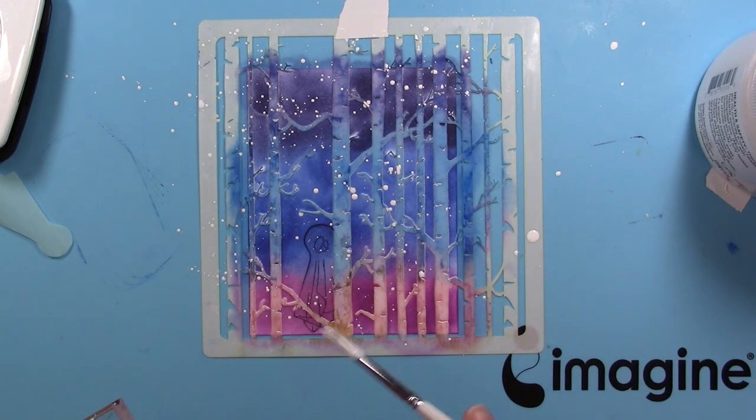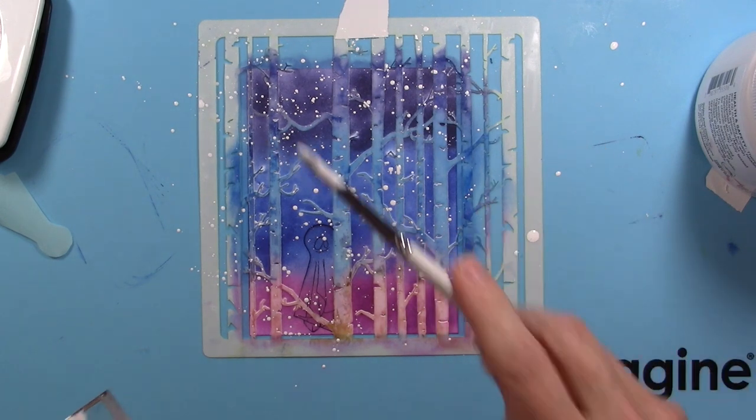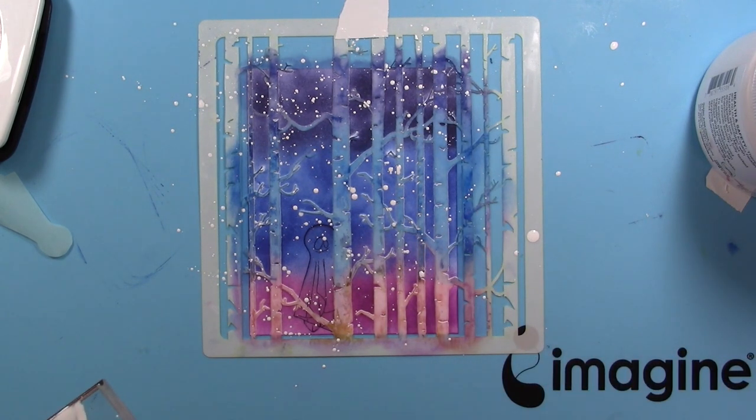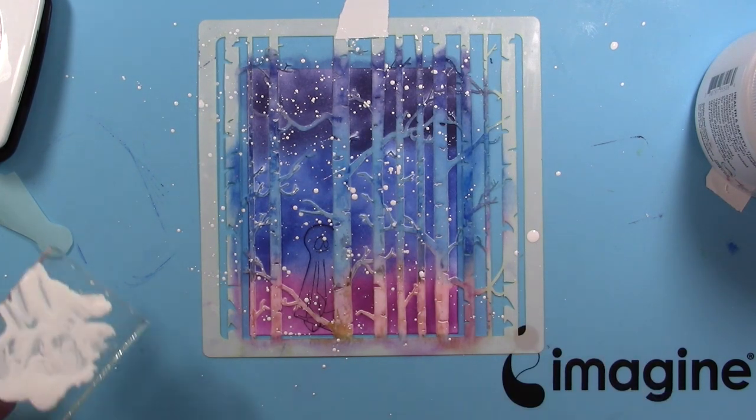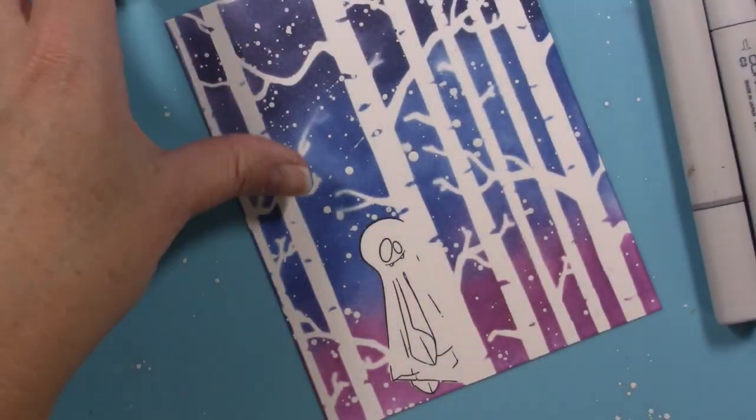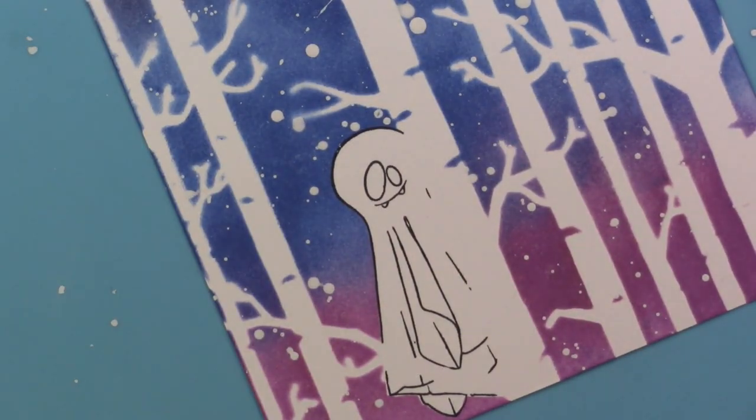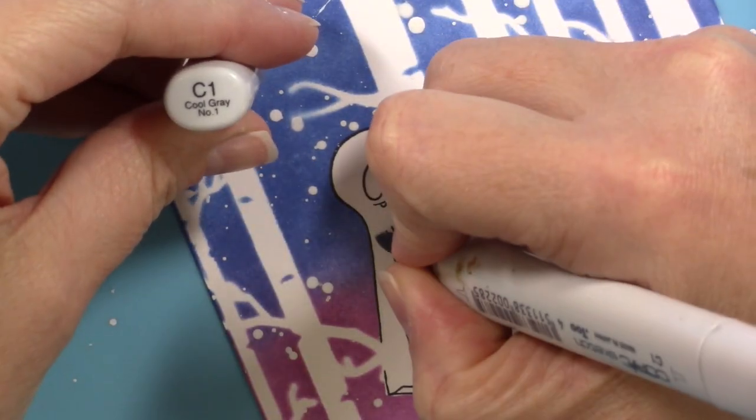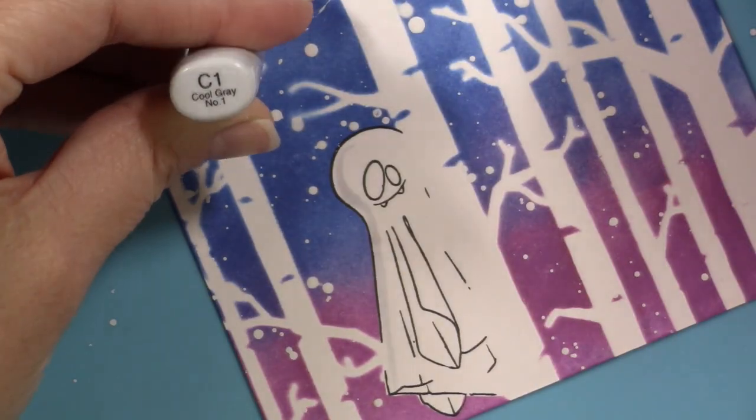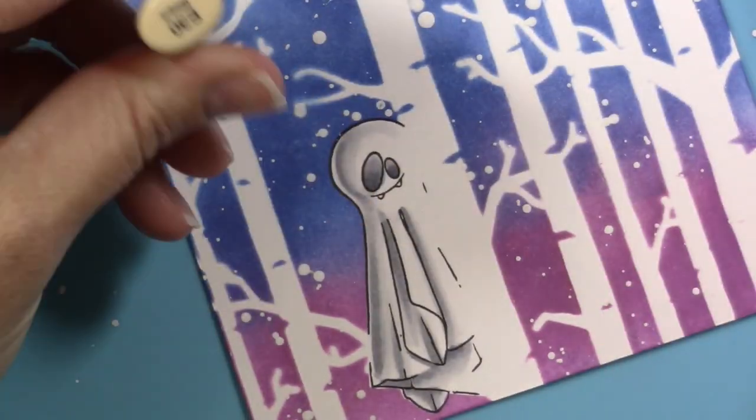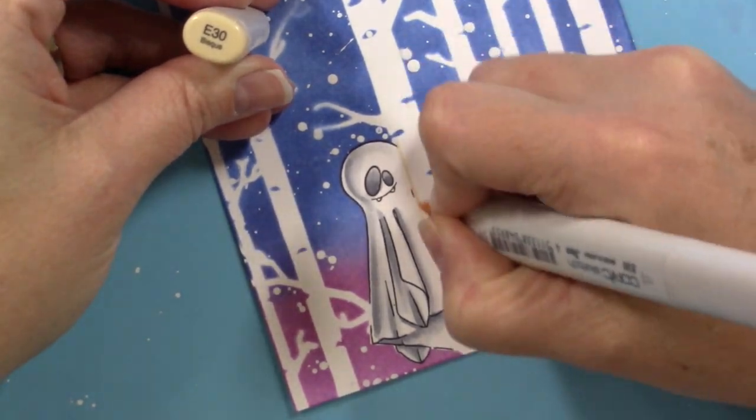When I pull the stencil off and the mask off, the ghost is going to be the background color as well as the trees. So what I really want to do once I remove that stencil is define the ghost from the trees. I'm going to take my alcohol markers and simply color up this ghost, and remember that I stamped him in my Memento Tuxedo Black ink so it's very safe. However Versifying Claire does not work with your alcohol markers.